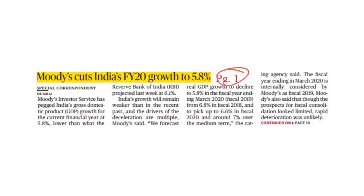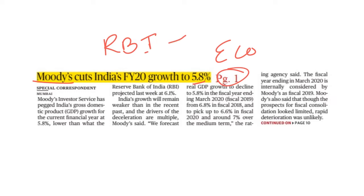Page number 1 also covers the economy. Moody's cuts India's financial year 2020 growth forecast to 5.8%. Previously, the expected GDP growth was 6.1%. Moody's Investor Service has revised the forecast downward.